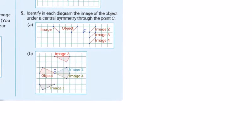And finally in this video: Identify in each diagram the image of the object under central symmetry through the point C. So I have my object. So central symmetry to a point: it ends up upside down and back to front. That's one way to remember it.